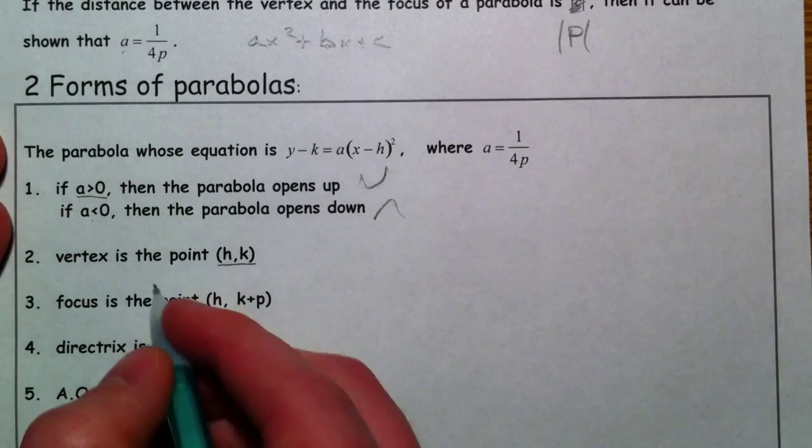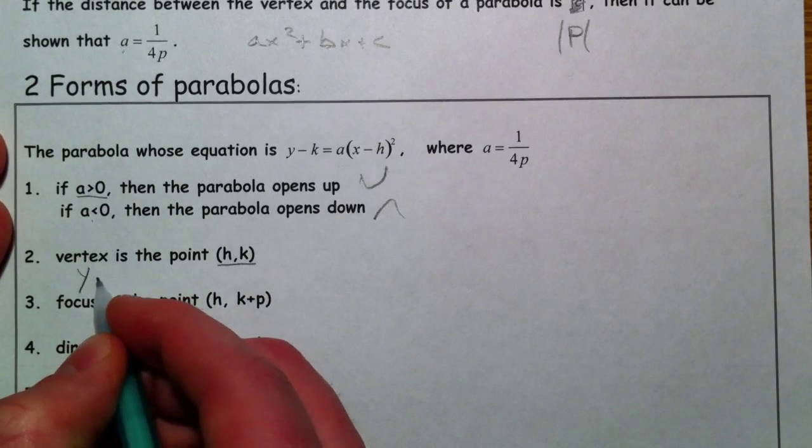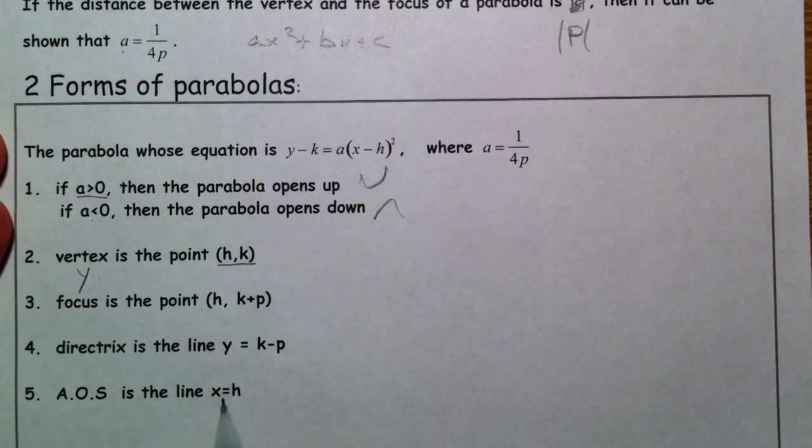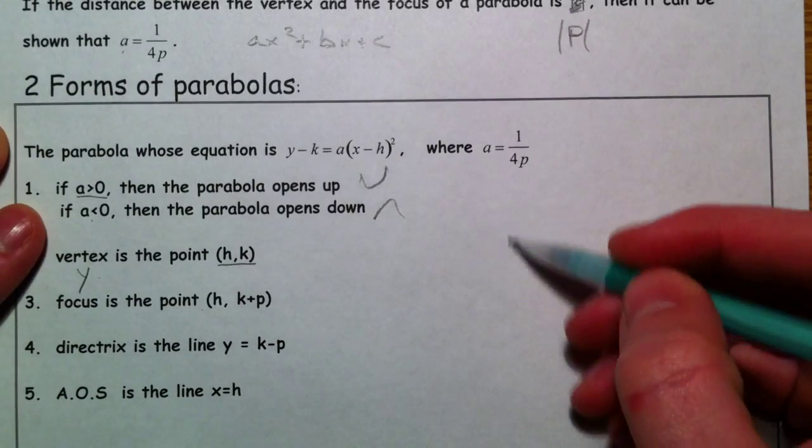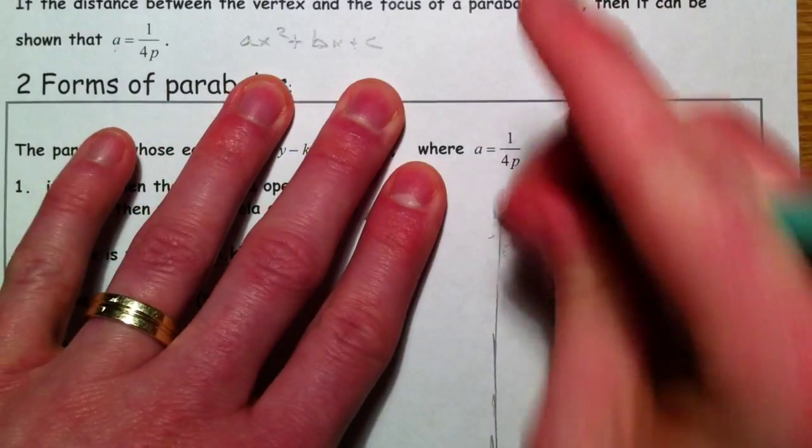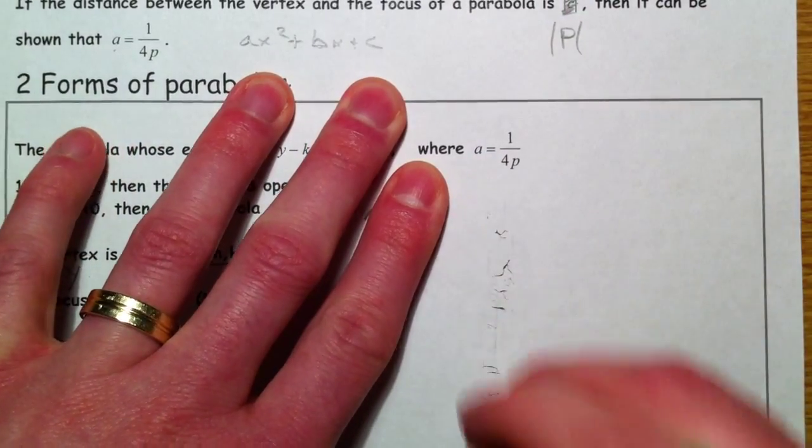Reminder that (h,k) is our vertex, there's nothing new there. And so if it's y, well, and we'll get into that. I'm not going to deal as much with this. But just keep in mind that you can have a parabola that opens up, and you can have a parabola that opens down.